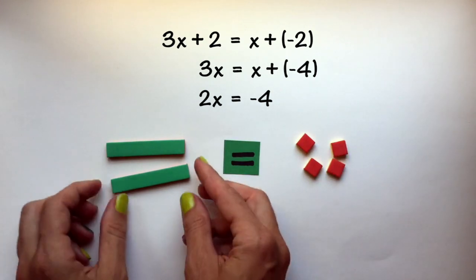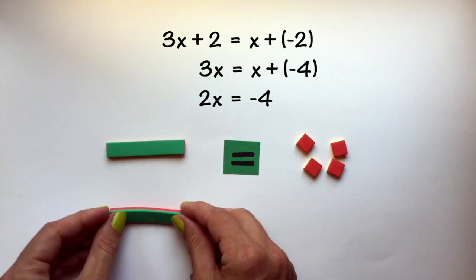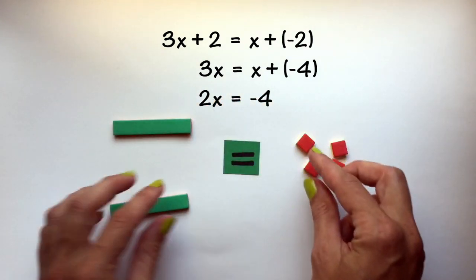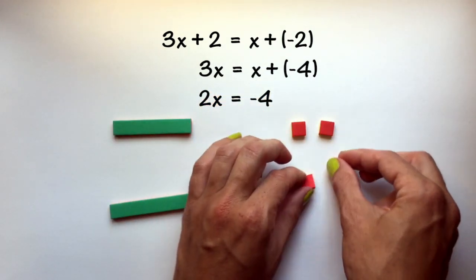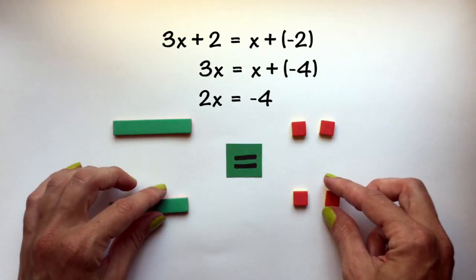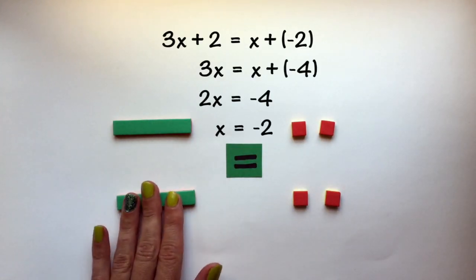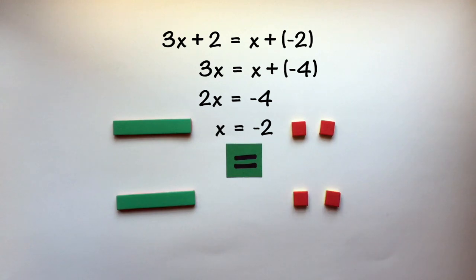Now, we're still not done yet because we want to know what only one x is. So, we need to separate them into two equal groups. And when we do so, we can see that x is equal to negative 2.